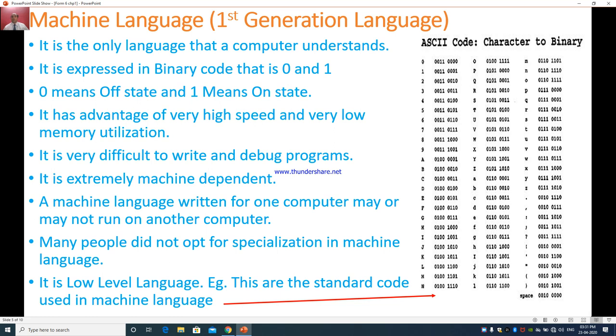Let us understand each generation. This is the machine language which is also called as first generation language. What is this machine language made of? It is the only language that a computer understands. How it is expressed? It is expressed in binary code that is zeros and one.